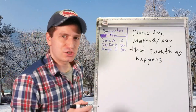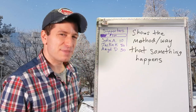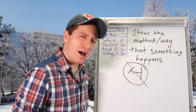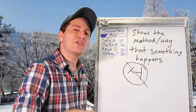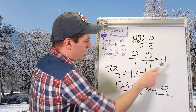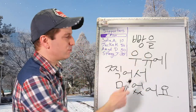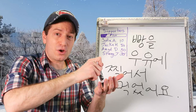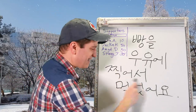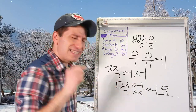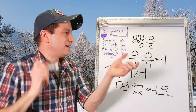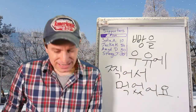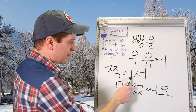There's one more usage of the 서 form: it can also be used to show the method or way that something happens. The 서 is actually more commonly not added in this usage, but you might also see it added. For example: 빵을 우유에 찍어서 먹었어요 — 빵 is bread, 우유 is milk, 찍다 is to dip. Dipping is the way you eat it — I ate the bread by dipping it in milk.